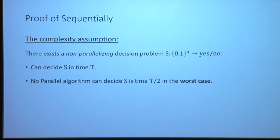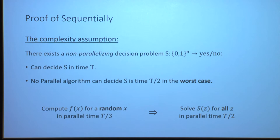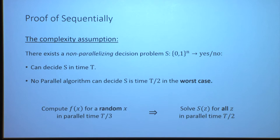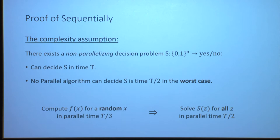What we're going to show is a worst-case to average-case reduction: if you can compute the inherently sequential function on a random input x with good probability in time t over 3, then you can also solve the decision problem s on the worst case for every input in slightly longer time — t over 2, still much faster than t. This assumption is very mild and believable: if false, it means essentially every computation can be parallelized, which would be extremely surprising. Also, for our construction to be secure, we don't need to know which decision problem s cannot be parallelized — we just need such a decision problem to exist. Our construction doesn't depend on s; we only use s in the security proof.